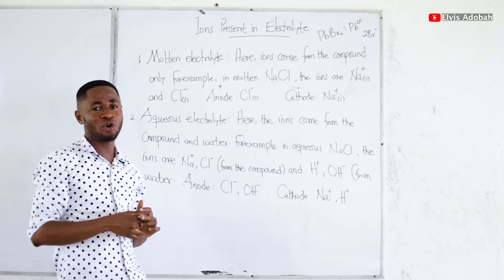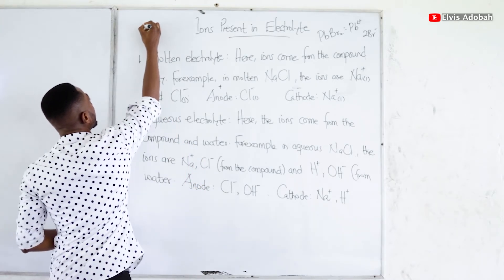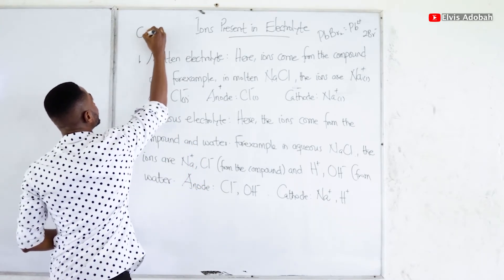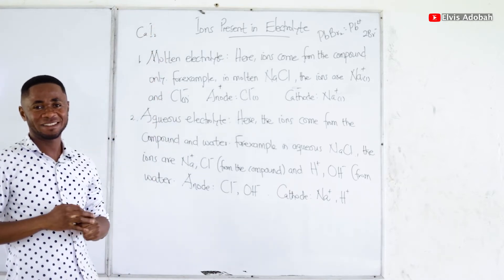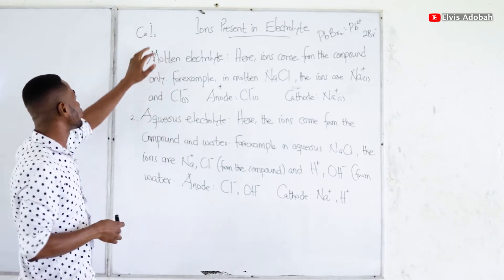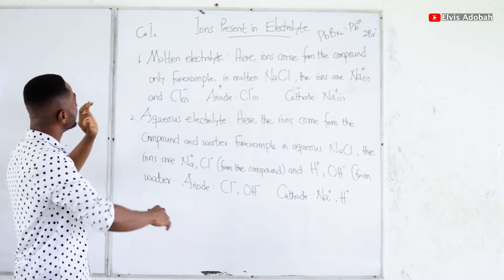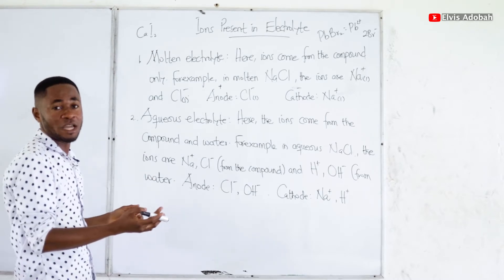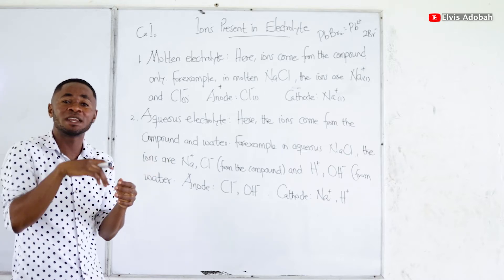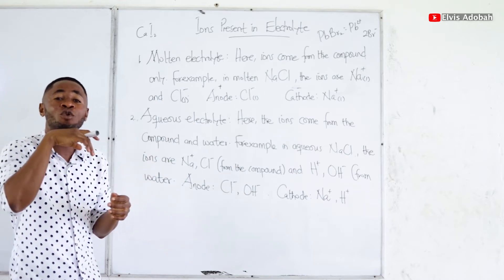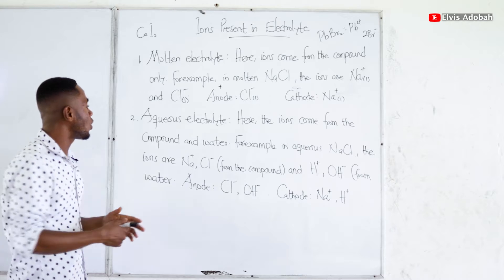What if we have calcium iodide? Try and isolate the positively charged particles and the negatively charged particles. Then you will know where the positively charged particles will be attracted to and where the negatively charged particles will also be attracted to. Simple.